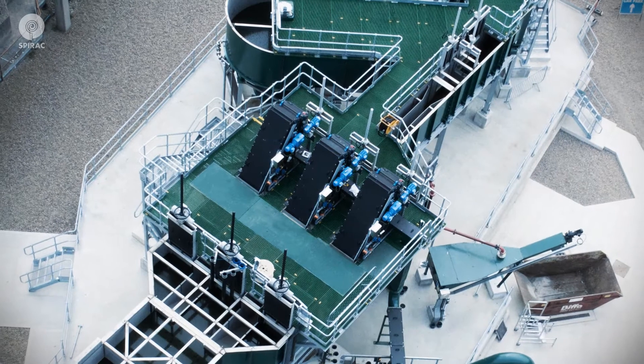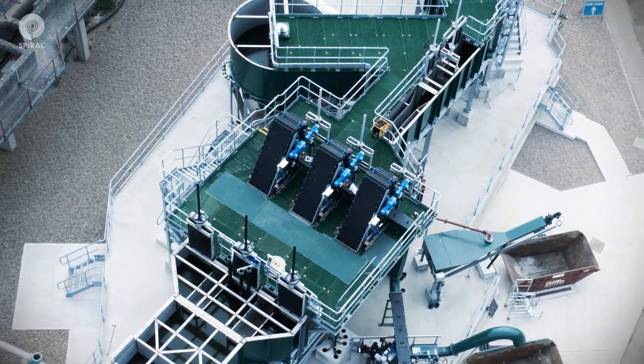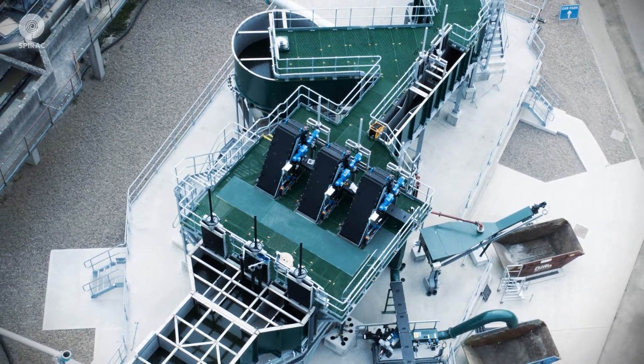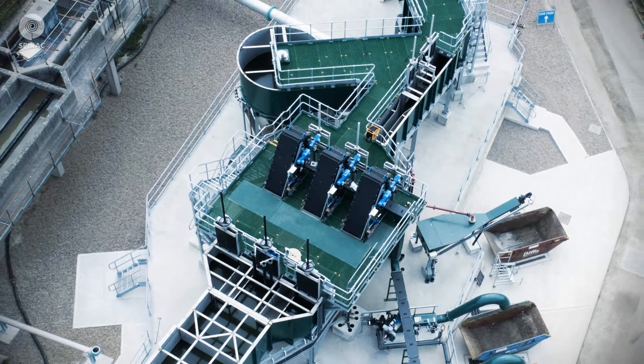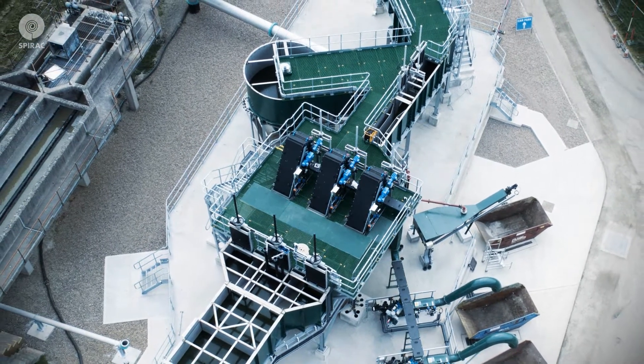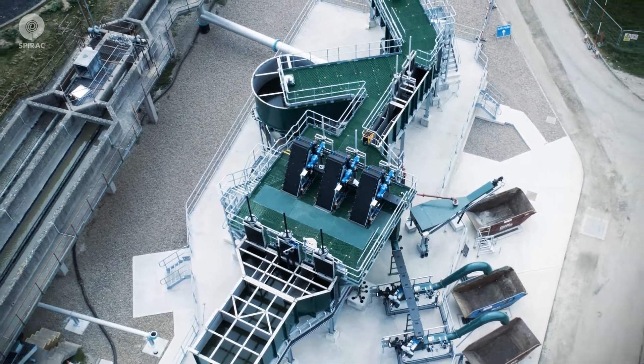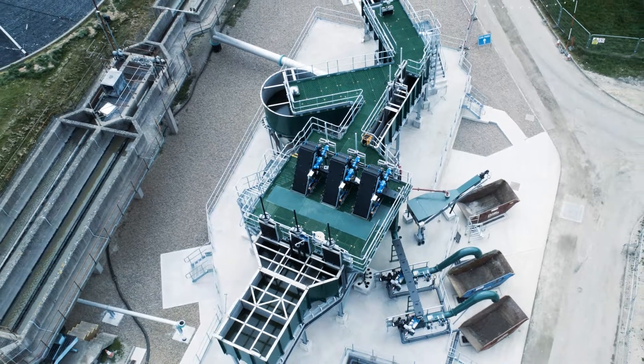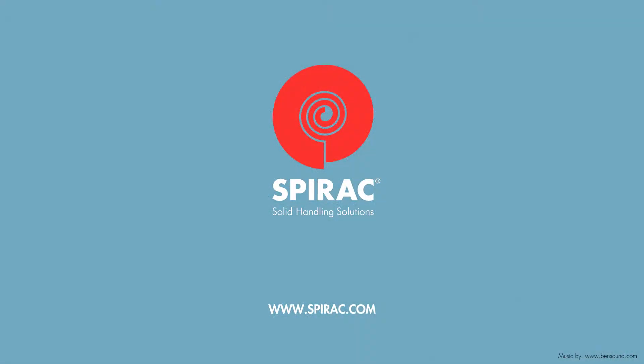Spirac was contracted to provide a prefabricated package treatment plant. This plant uses three FineGuard screens, each capable of passing a maximum flow of 566 litres per second, 13 million gallons per day.